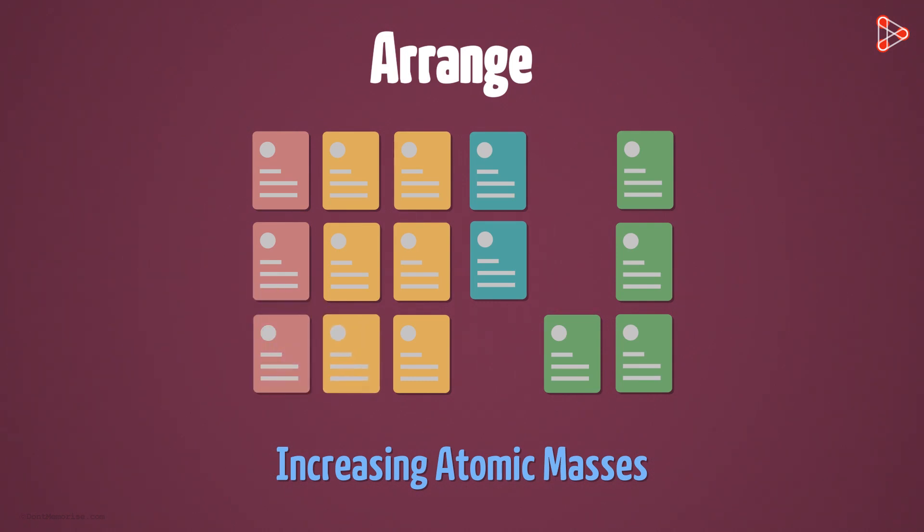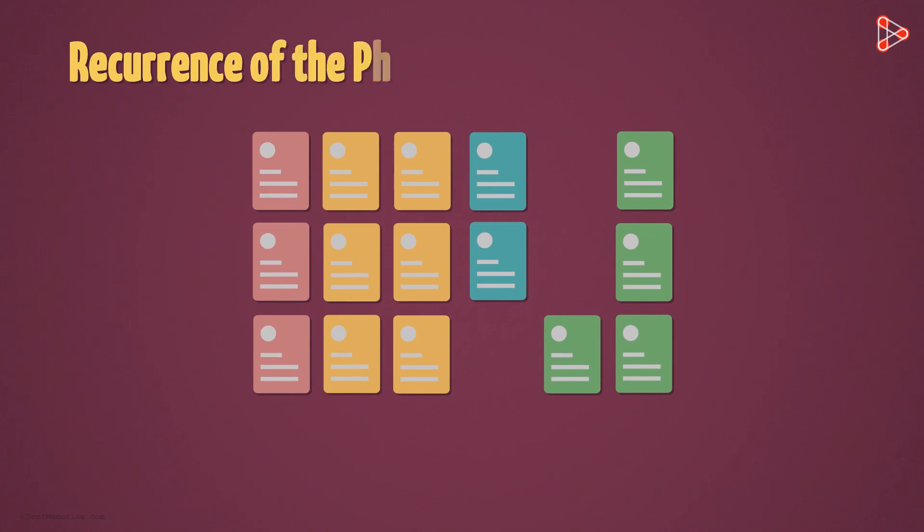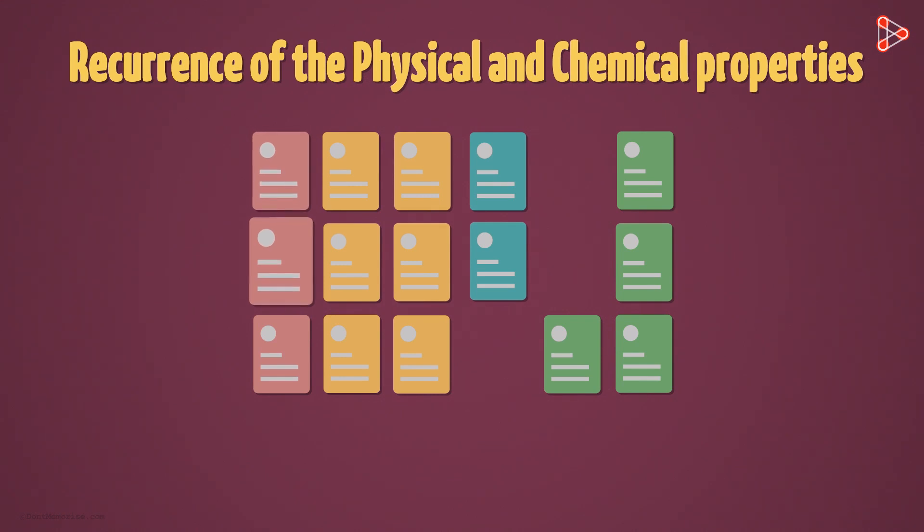Second observation that Mendeleev had was the recurrence of the physical and the chemical properties of these elements. When arranged in a systematic manner, it was found that the physical and the chemical properties of elements recurred at a particular interval or frequency.